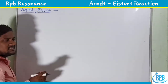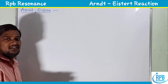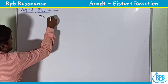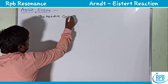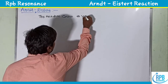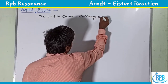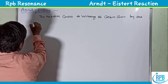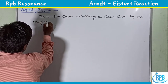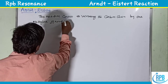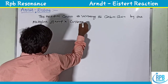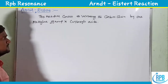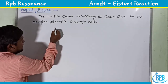The Arndt-Eistert reaction consists of increasing the carbon chain by one methylene group in carboxylic acids. This is a very easy and simple reaction.